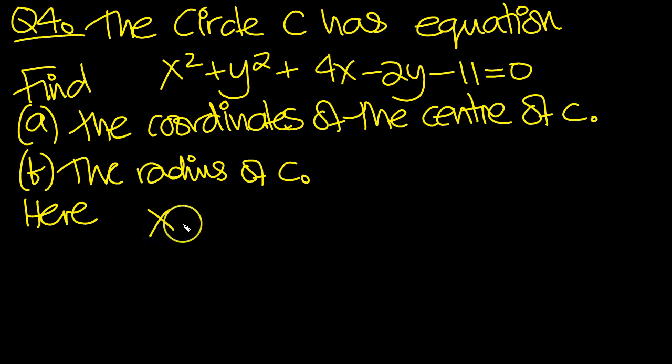We've got x, half the 4 you get 2, so it's x plus 2 squared. And then y, half the minus 2 you get minus 1, so it's y minus 1 squared.